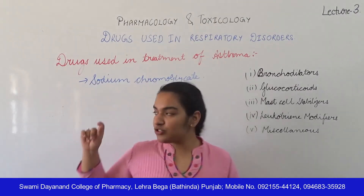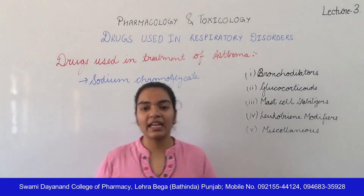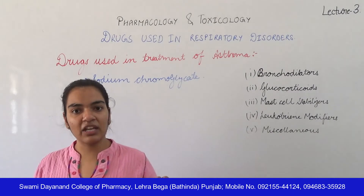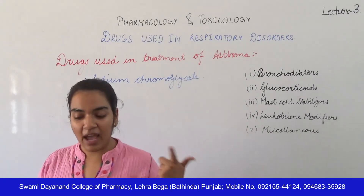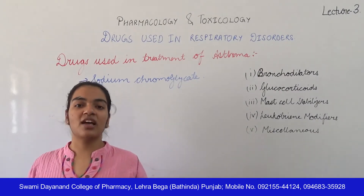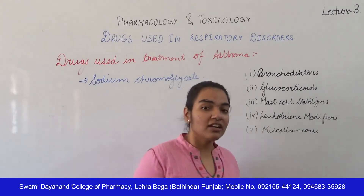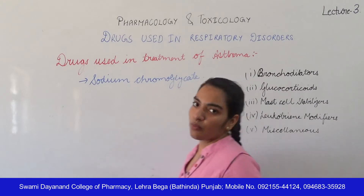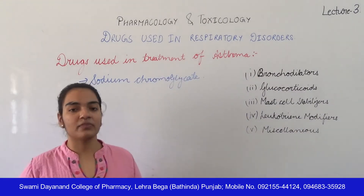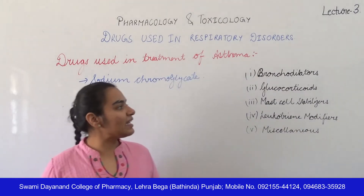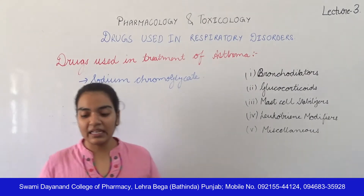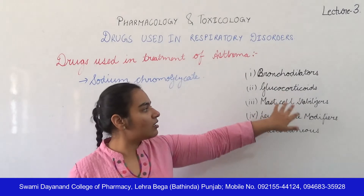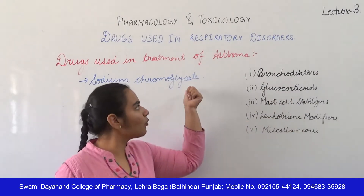Sodium chromoglycate can be used prophylactically in bronchial asthma, allergic rhinitis, and allergic conjunctivitis. Besides sodium chromoglycate, there is another agent called nedocromil, which has a similar effect to mast cell stabilizers, like sodium chromoglycate.